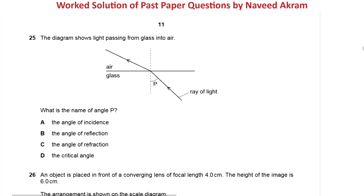This question is from October/November 2019 Paper 1 Variant 2, question number 25. The diagram shows light passing from glass into air. What is the name of angle P? This is a very easy question. The incident ray meets the normal at the boundary, and the angle between the incident ray and the normal is the angle of incidence.